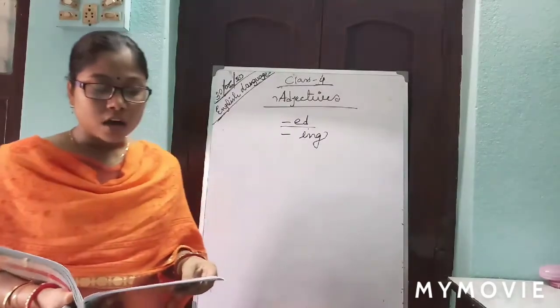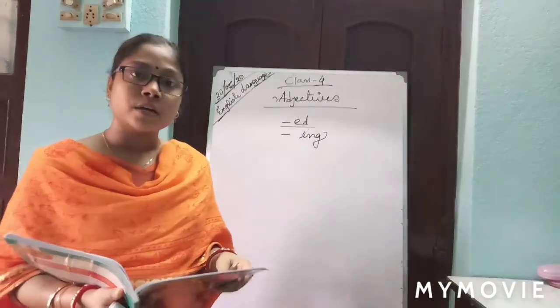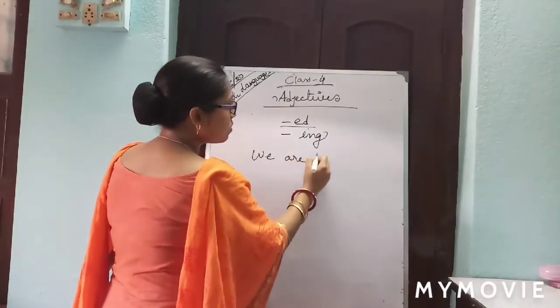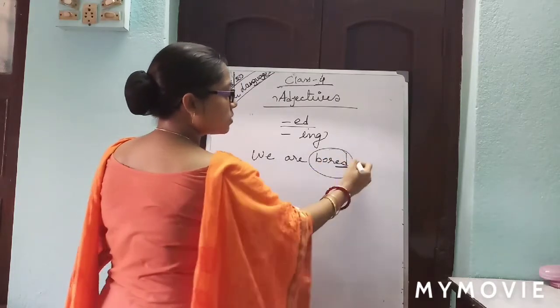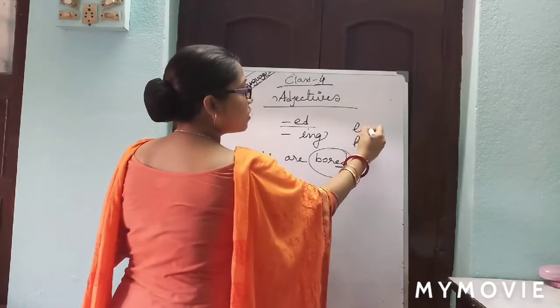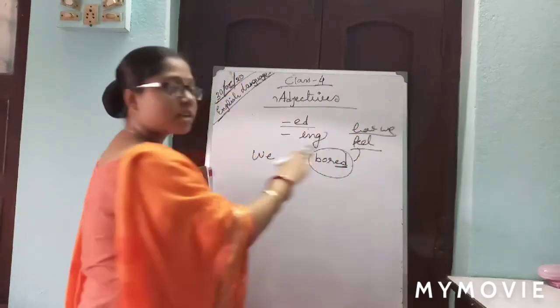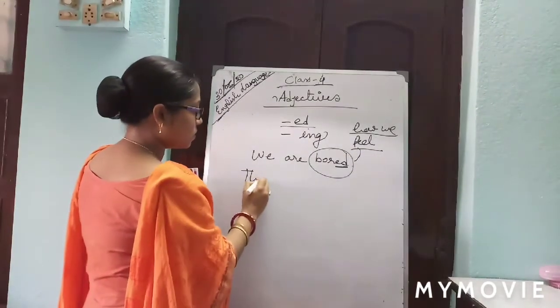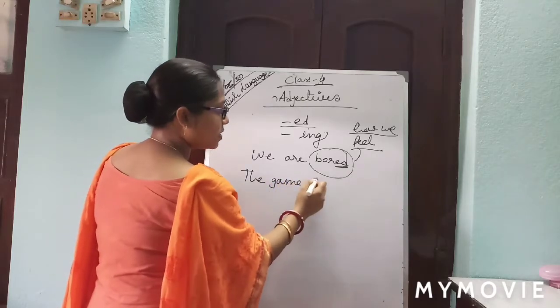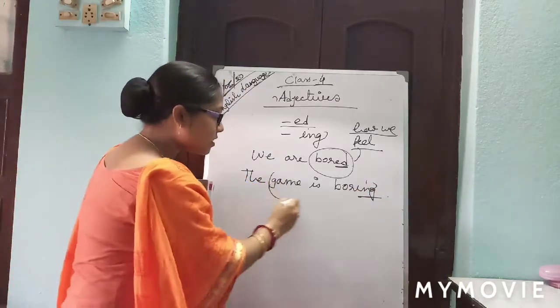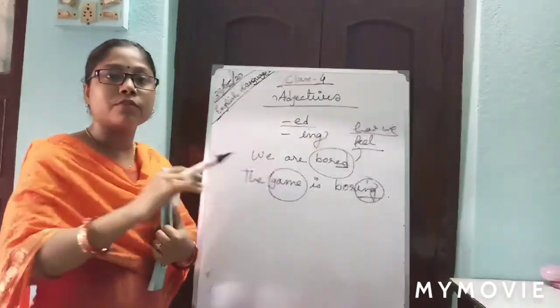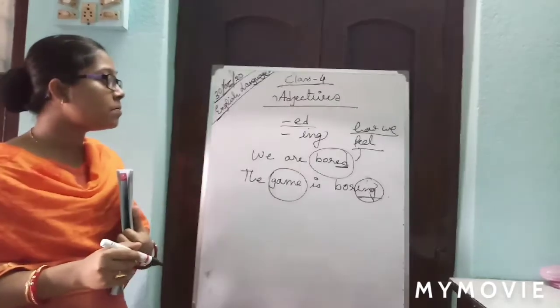For example: 'We are bored' — that is our feeling, ending with '-ed'. 'The game is boring' — the game is the thing which makes us feel that way, so it ends with '-ing'. The thing that causes the feeling is described with the '-ing' adjective.